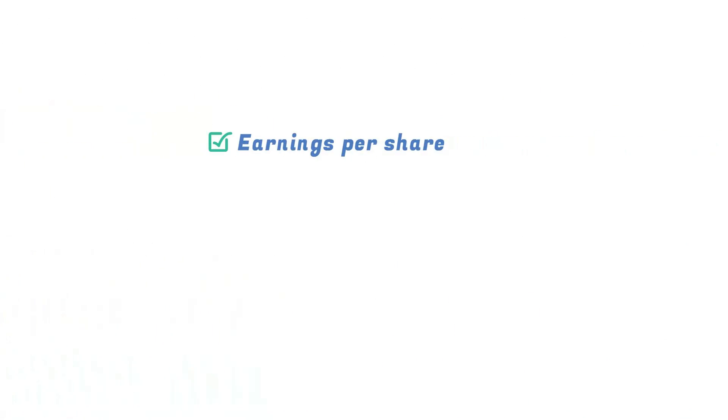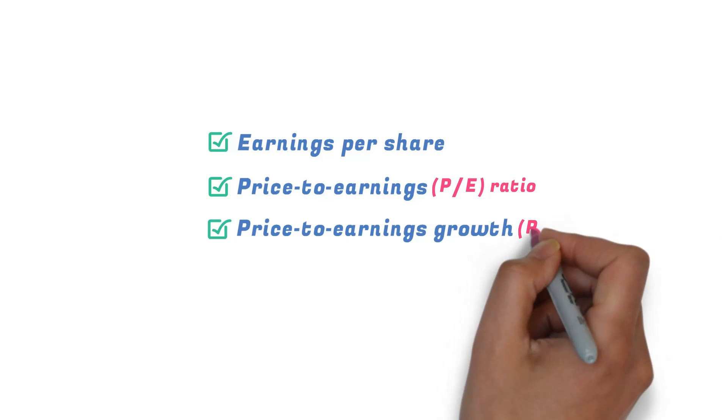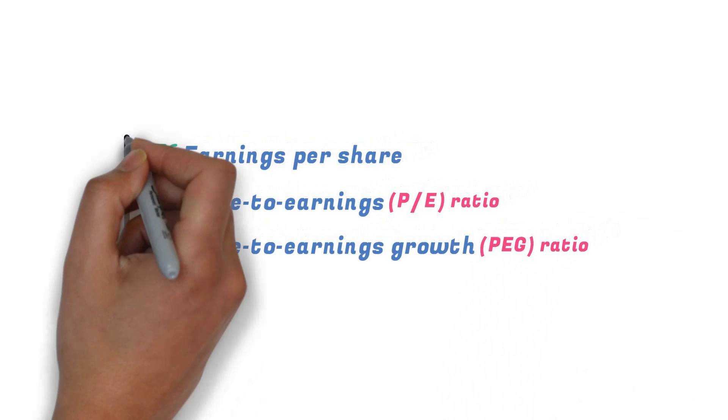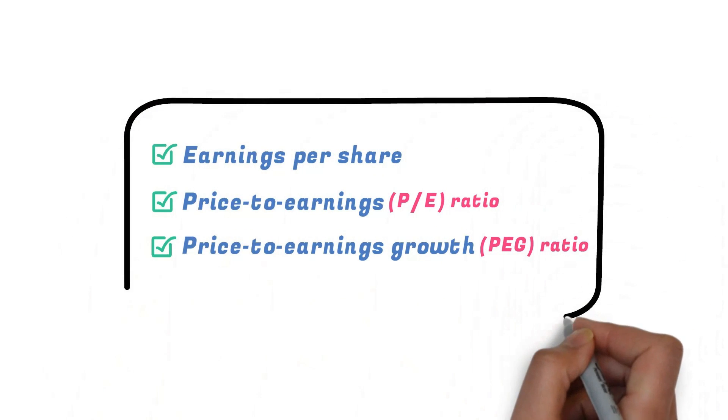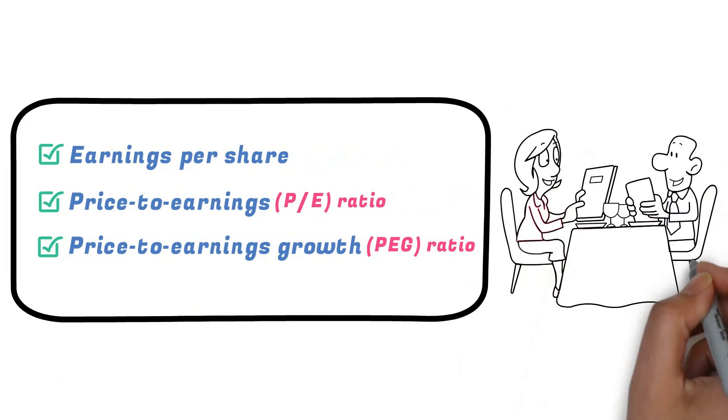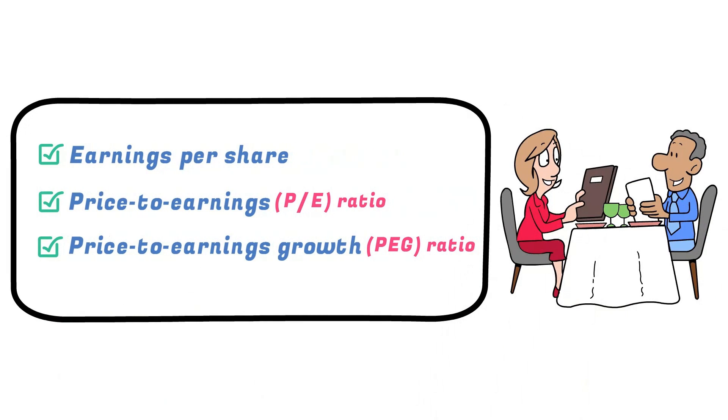In conclusion, earnings per share, price-to-earnings ratio, and price-to-earnings growth ratio are important metrics investors and analysts use to evaluate a company's stock but should not be used alone to make investing decisions. Always do your own research and consult before making decisions.